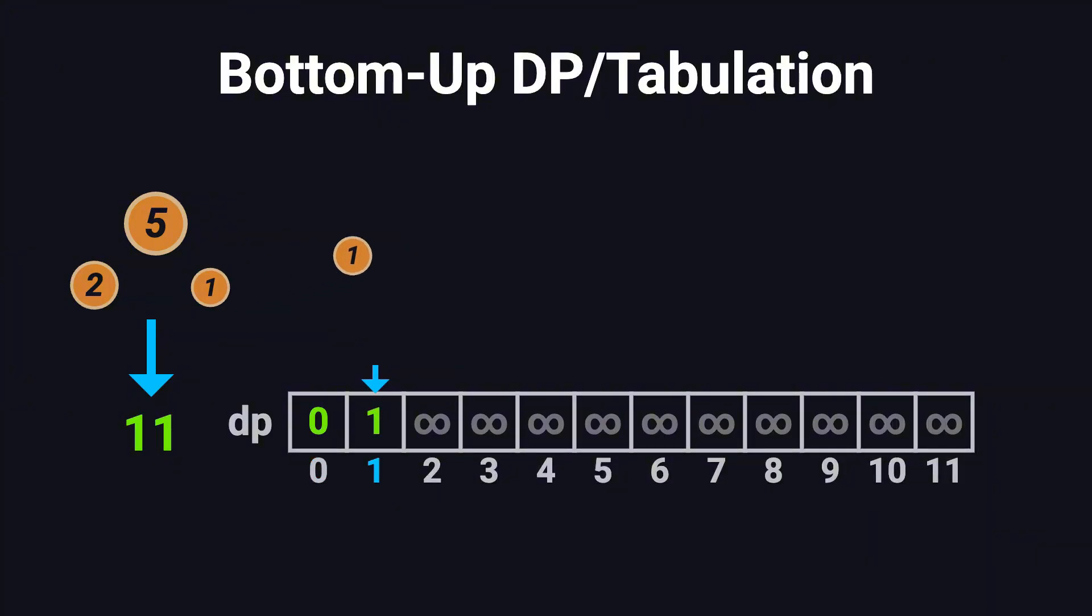Now let's try to fill in this table step by step. dp[1] is 1, because we can just use a single 1 coin. dp[2] is also 1, because a single 2 coin works, and it's better than 2 one coins. dp[3]? We could use a 2 coin and a 1 coin, or 3 one coins. The first option uses fewer coins, so dp[3] is 2.